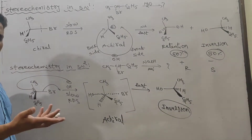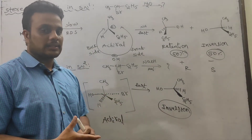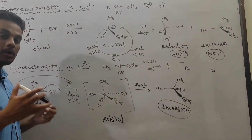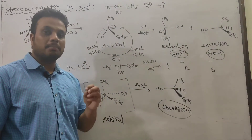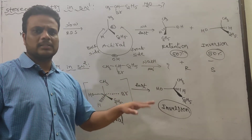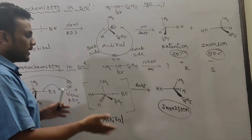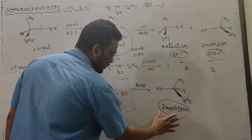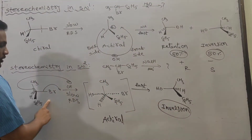Regarding stereospecificity in SN2: we cannot strictly say that inversion means dextro becomes levo or R becomes S, because it depends on the priority of the leaving group and the incoming nucleophile. If the nucleophile and leaving group have the same priority, then R becomes S and (+) becomes (−). But priority may change, so we cannot always say R becomes S. Regardless, the product is formed with inverted configuration, and attack is from the back side.